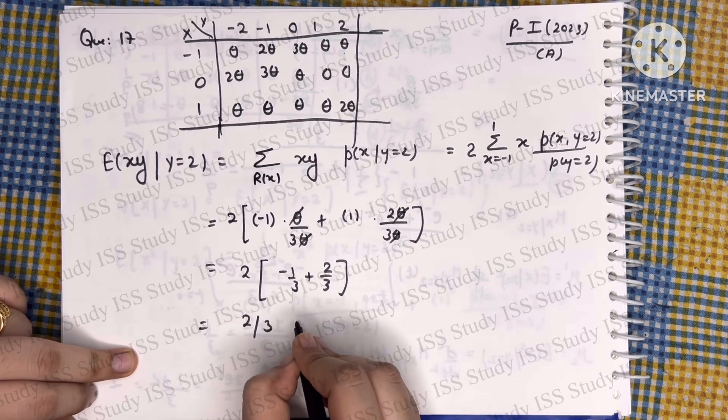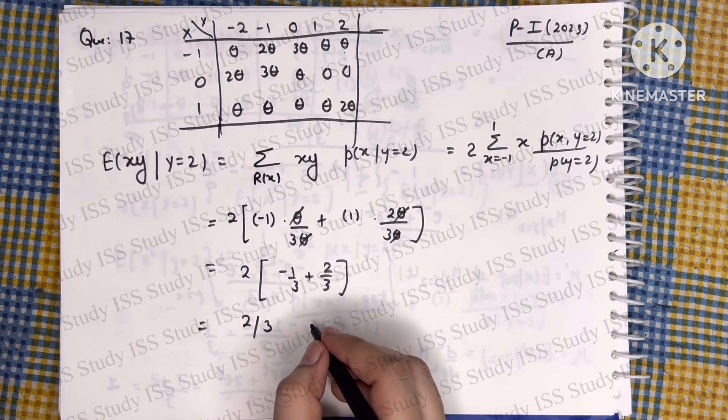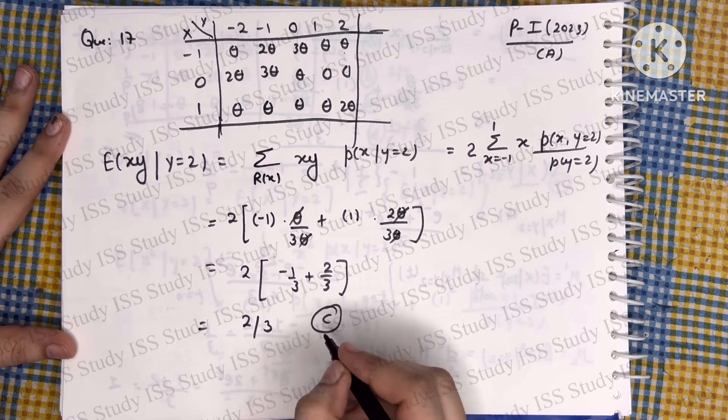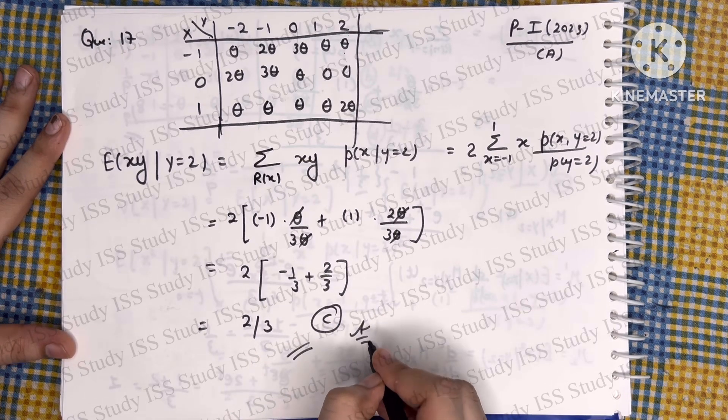We are getting 2/3, and 2/3 is given in option C in set A. That means this is the correct answer. I think it is clear to you all.